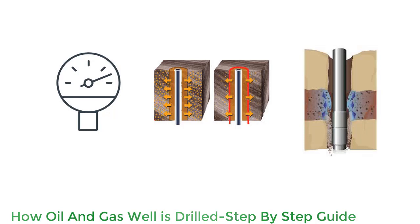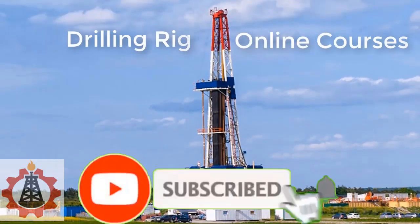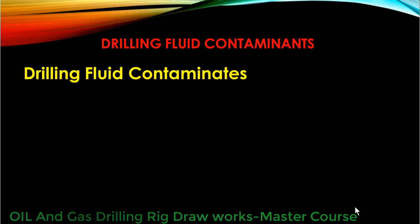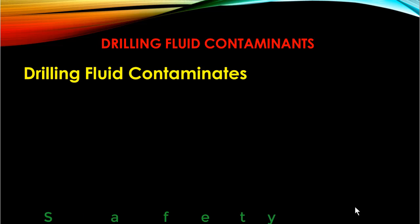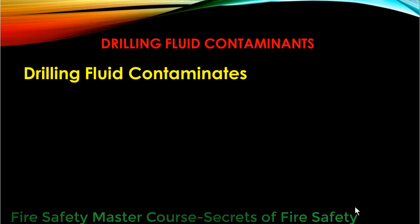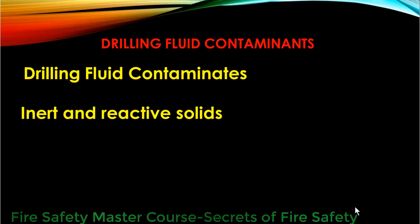Stuck pipe may result in huge economical loss. A contaminant is any material or substance that causes undesirable effects on mud properties. A mud is said to be contaminated when a foreign material enters into the mud system and causes undesirable changes in mud rheology like density, viscosity, and filtration. Mud contamination can result from overtreatment of the mud system with additives, or from material entering into the mud during the drilling process. While much of the drill solids are inert, certain materials can cause severe problems with drilling fluid properties.